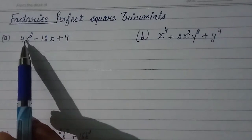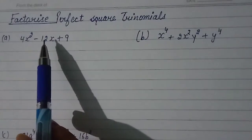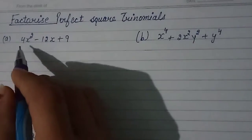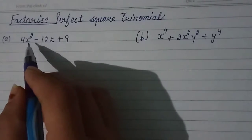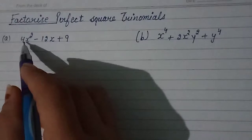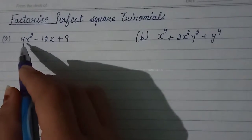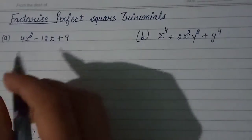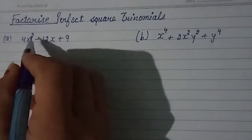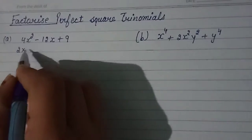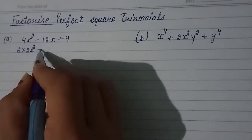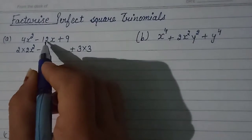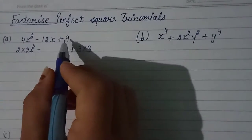This one is the square of 2x, and this one is the square of 3, and this one is the product of the first and third term. So first we factorize in small terms. 4x squared means 2 into 2x squared, minus 3 — 9 is 3 into 3 — and this one is the product of first and last term.